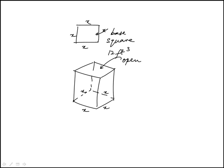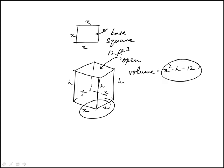We're told that it has a volume of 12. Let's say the height is h, so its volume would be the area of the base x squared times h, and that equals 12. So that's one condition we're given.